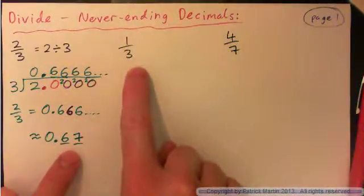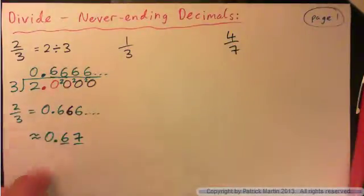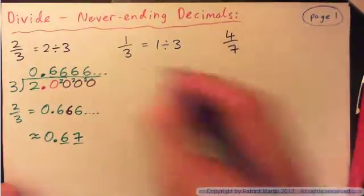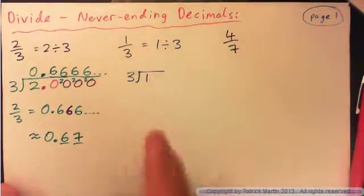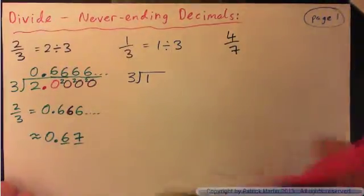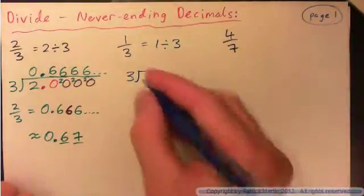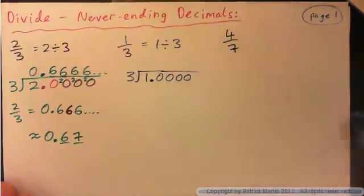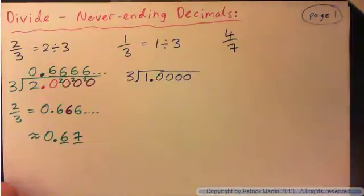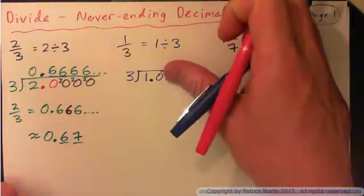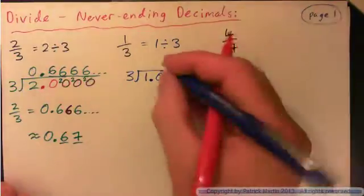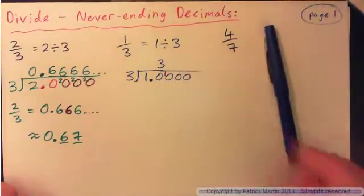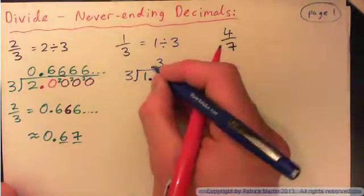Now try 1 divided by 3. That is 1 divided by 3, or 3 into 1. But 3 into 1 isn't going to work, so let's write that as 1.0000 and see what happens. We'll get 3 into 10. And the decimal point in the answer goes up here.